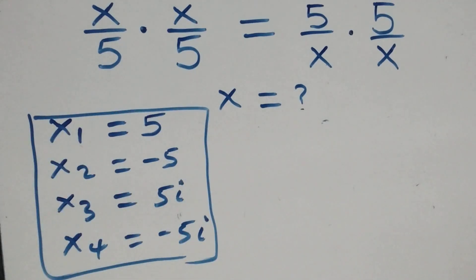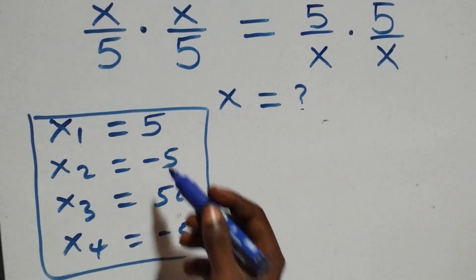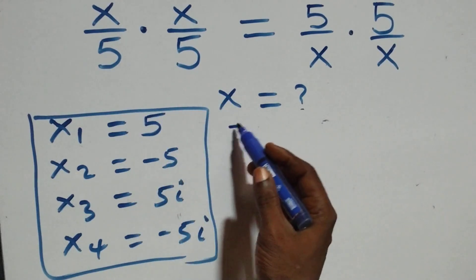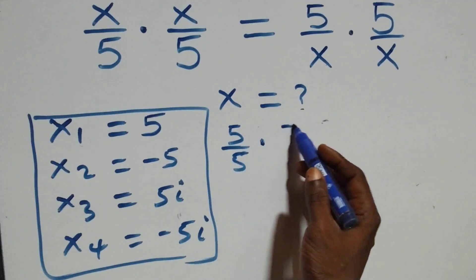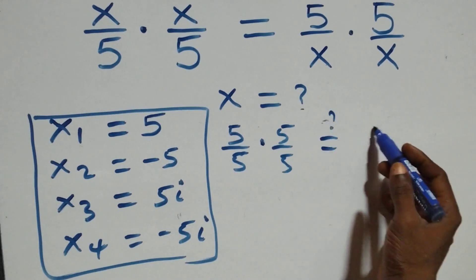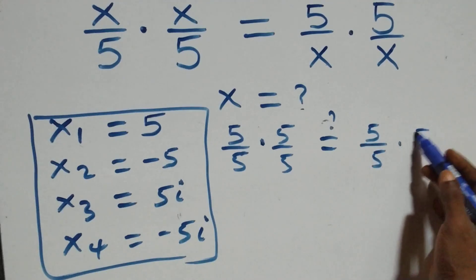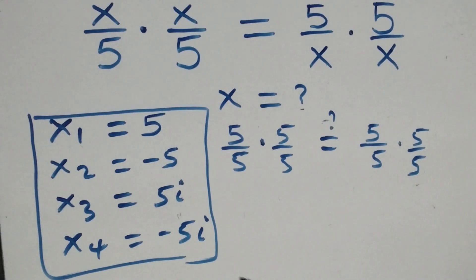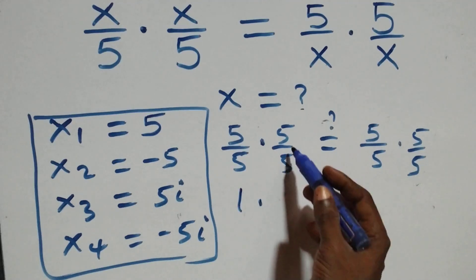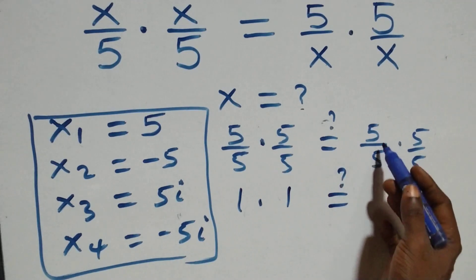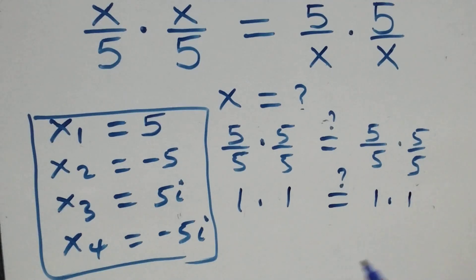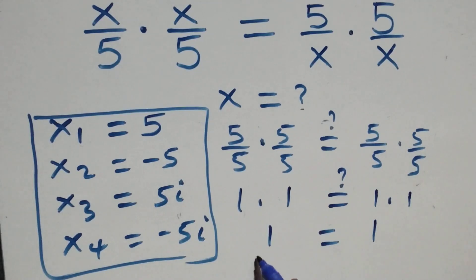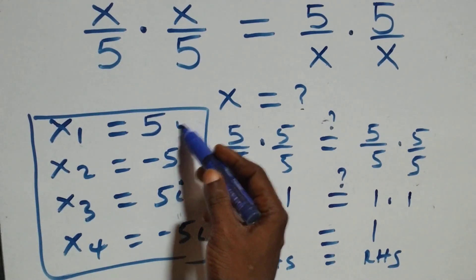Now let's check if our solutions satisfy the given problem. Substituting x = 5: we get 5/5 times 5/5 equals 5/5 times 5/5. Since 5/5 = 1, we have 1 times 1 equals 1 times 1, so left-hand side equals right-hand side. Therefore, x equals 5 satisfies the given problem.